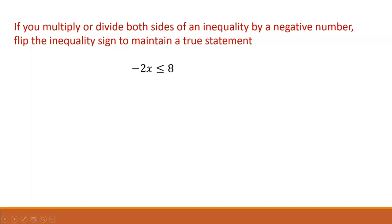Here's an example. If we have the inequality negative 2x is less than or equal to 8 and we want to solve for x, we'll have to divide both sides by negative 2. Because we've divided by a negative number, we have to reverse the direction of the inequality sign to keep a true statement. So our solution is x is greater than or equal to negative 4.